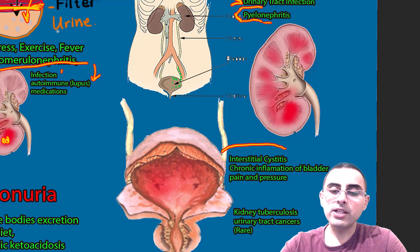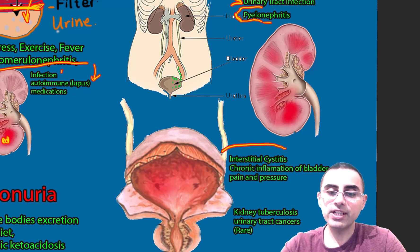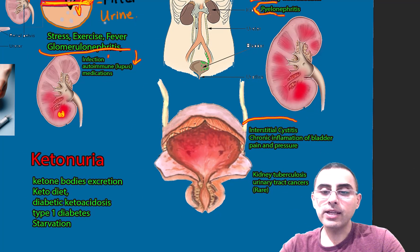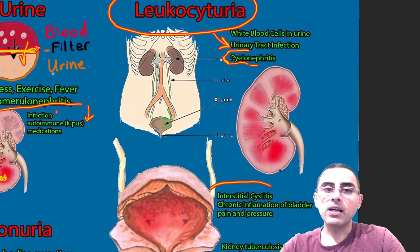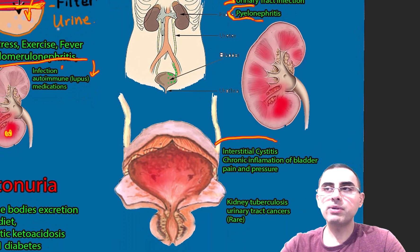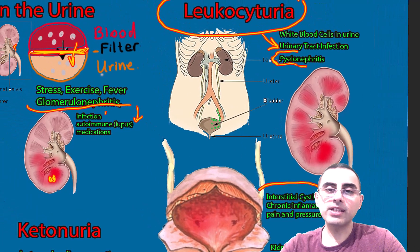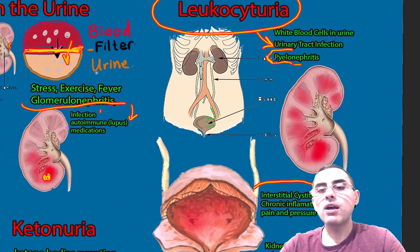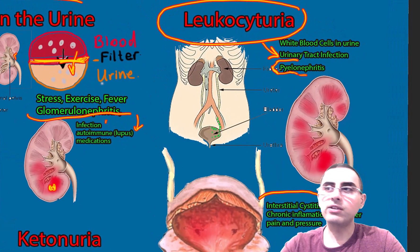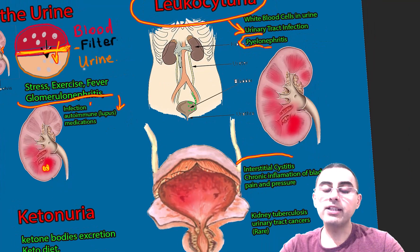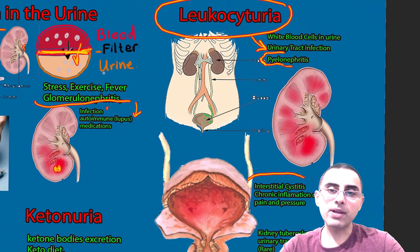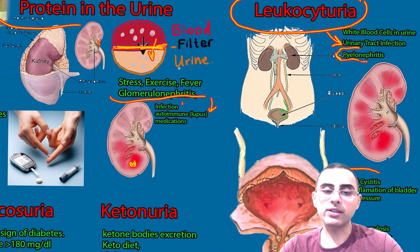Leukocyturia can also be caused by interstitial cystitis, a chronic inflammation of the bladder causing pain and pressure. In much rarer cases, it may be caused by kidney tuberculosis, kidney cancer, or urinary tract cancers. However, these are rare, and in the absence of red flags or serious risk factors, they are not the first consideration.